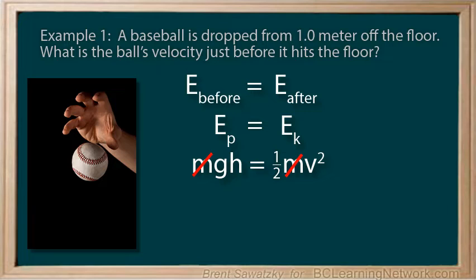Next, let's rearrange our equation to solve for the after velocity. We're trying to get the v by itself on the left. So, to get rid of the one-half, we can just multiply both sides by 2. Then, to get rid of the squared, we just do the opposite and square root both sides. And we're ready to solve for v.